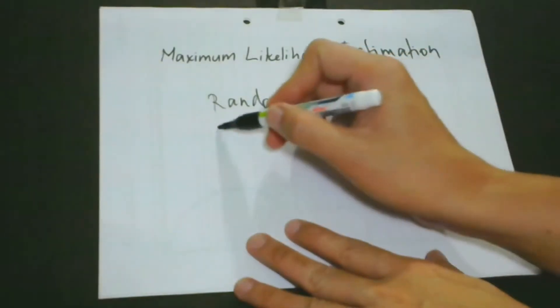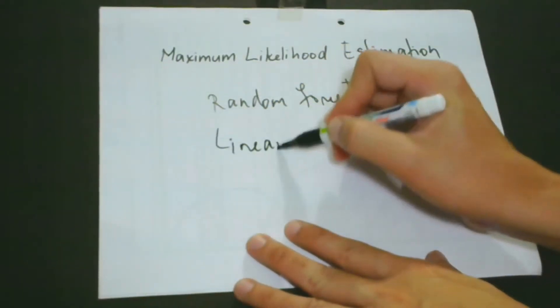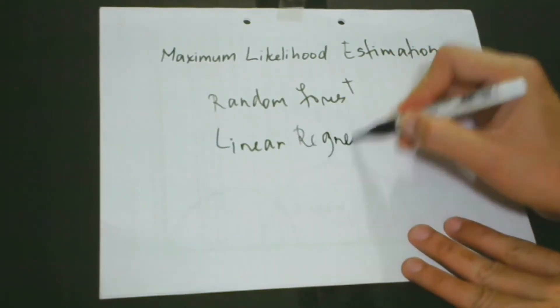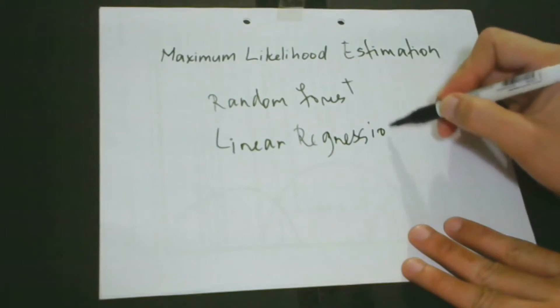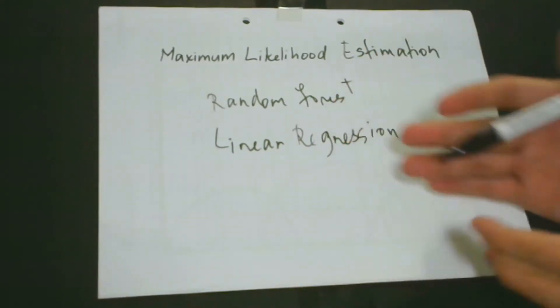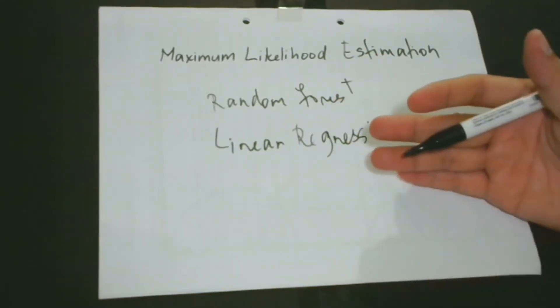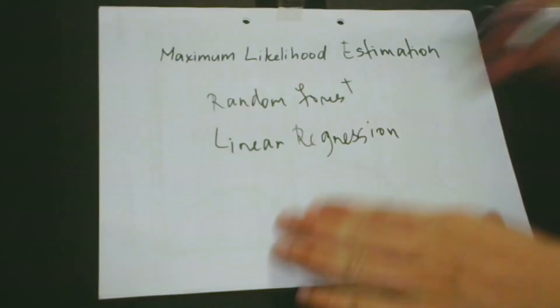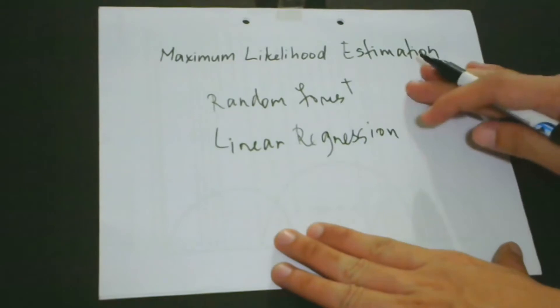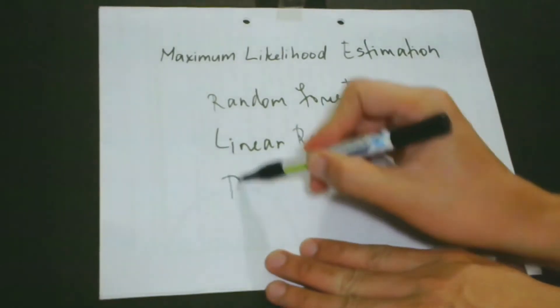And also we have a linear regression model. I am sure you are familiar with linear regression, which is used to predict some things. For example, if you are into sales, you would like to predict the sales performance. The important thing to consider when we are talking about maximum likelihood is what we call parameters.